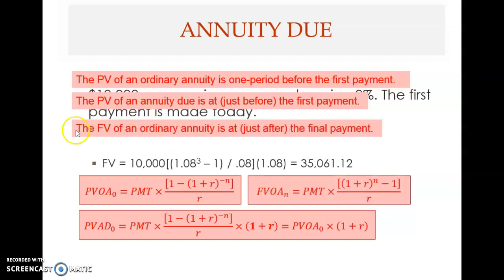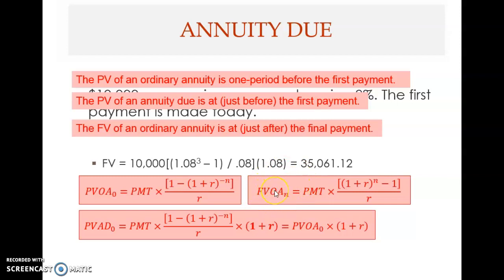Now we come to the future value of an ordinary annuity. The formula is: PMT multiplied by (1 plus R) raised to the power of N, minus 1, divided by R. Note the difference from the present value formula: here it's positive N instead of negative N, and (1 plus R) to the N comes first. This is the formula for future value of ordinary annuity.